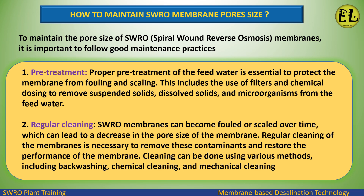To maintain the pore size of SWRO (spiral wound reverse osmosis) membranes, it is important to follow good maintenance practices. First, pre-treatment: proper pre-treatment of the feed water is essential to protect the membrane from fouling and scaling. This includes the use of filters and chemical dosing to remove suspended solids, dissolved solids, and microorganisms from the feed water.